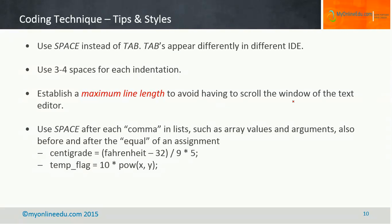Another tip is to use a space after each comma in lists — such as array values and arguments — and also before and after the equal sign of an assignment. For example, put a space after the minus operator; similarly, put a space before and after the multiplication operator. If you have a list like x, y, put a space after the comma. This helps increase the readability of your code.